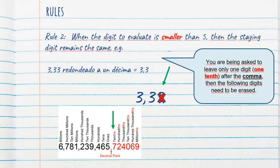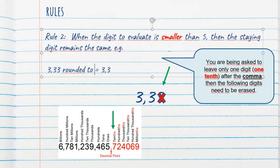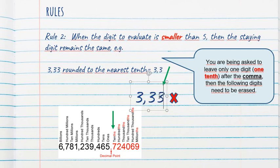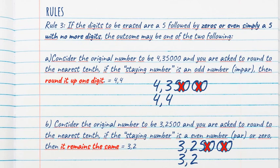Rules, rule number two. When the digit to evaluate is smaller than five, I'm not saying five or smaller than five, I'm just saying smaller than five, then the staying digit remains the same. Example, Gratia, 3.33, rounded to the nearest tenth, is 3.3. Why? Because the number you're going to delete is lower than five, therefore, you delete it, but nothing happens to the previous one. Again, this is the position you are being asked to leave only one digit behind, one tenth, after the comma, then the following digits need to be erased. Let's pause right here and see if you have questions so far.